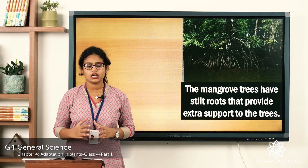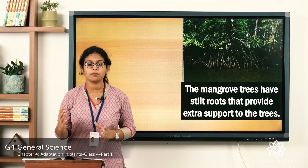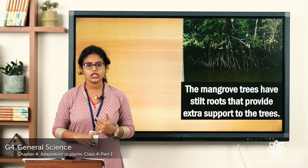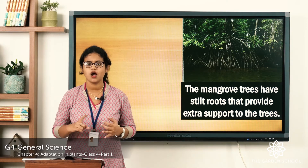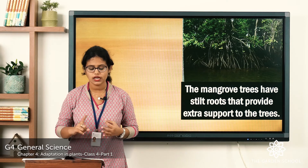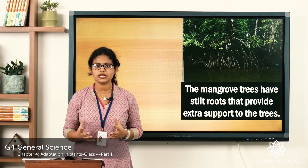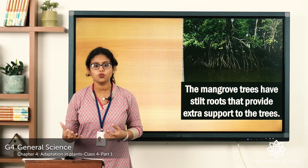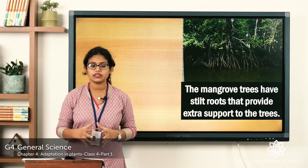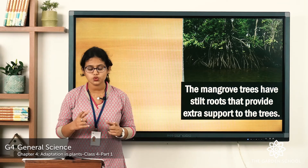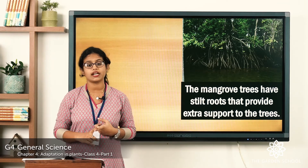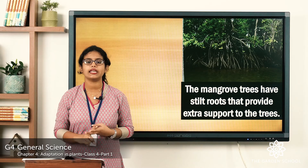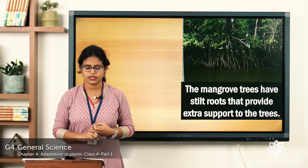There are two questions. Aquatic plants are adapted to grow in less sunlight, water, or air. Aquatic plants are plants that grow in water and they are adapted to live in less sunlight and less air.